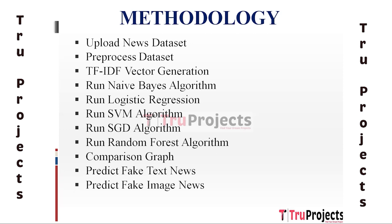The ninth module is Comparison Graph. After training all the machine learning models — Naive Bayes, Logistic Regression, SVM, SGD, and Random Forest — a comparison graph is generated. The graph displays the accuracy achieved by each algorithm on a common evaluation dataset, helping to understand which algorithm performs better in predicting fake news.